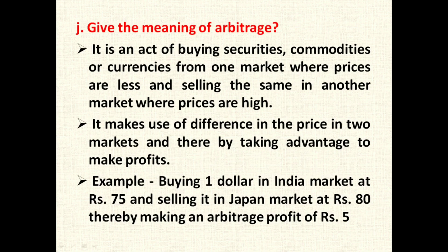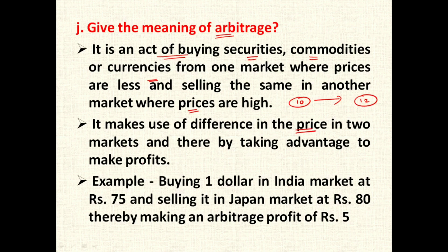The last question: give the meaning of arbitrage. Arbitrage is an act of buying securities, commodities, or currencies from one market where prices are less and selling the same in another market where prices are high. You buy from a market where prices are low and sell in a market where prices are more — this difference in price generates arbitrage profit. For example, if you buy a dollar in India at Rs.75 and sell it in the Japan market at Rs.80, then this is called the arbitrage process, done in order to earn profit.